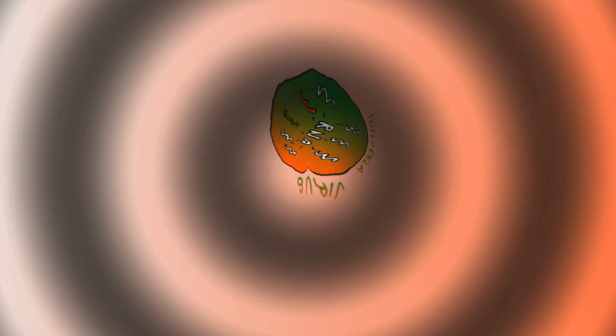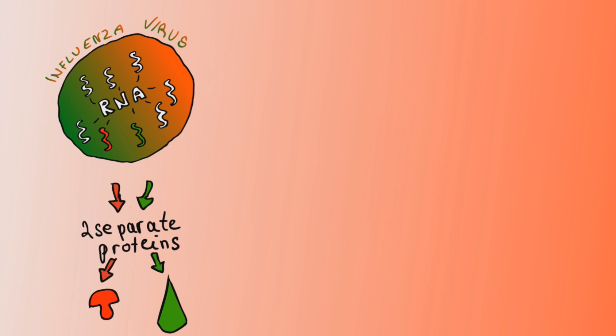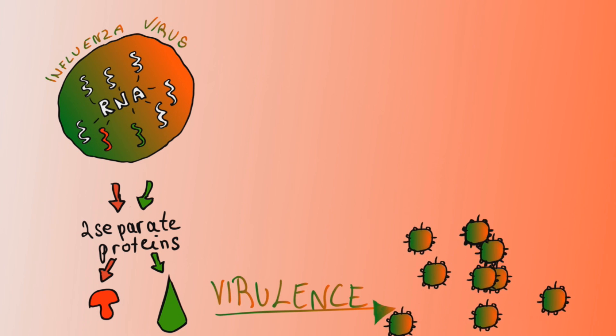Influenza viruses all have negative sense RNA that comes in eight different pieces. Two of those strands code for two separate proteins which are very important for understanding how virulent they are. Virulence is basically how easy the virus spreads and how much damage it causes.